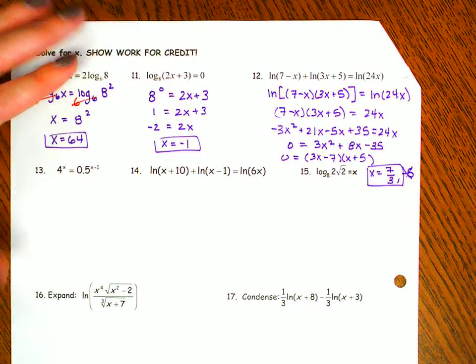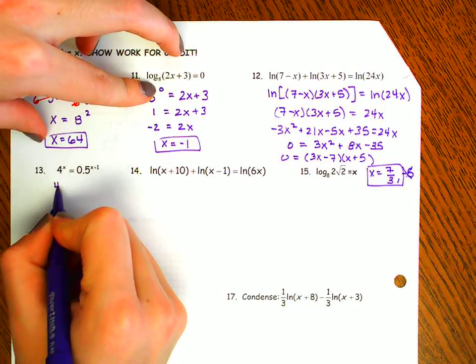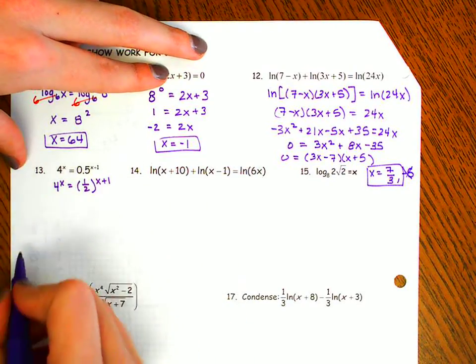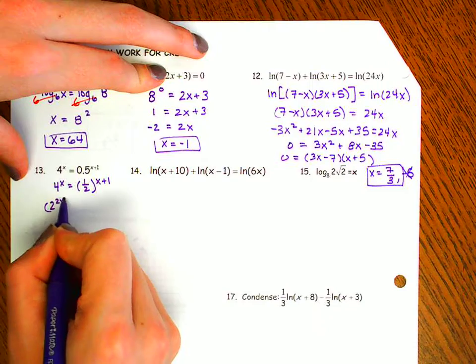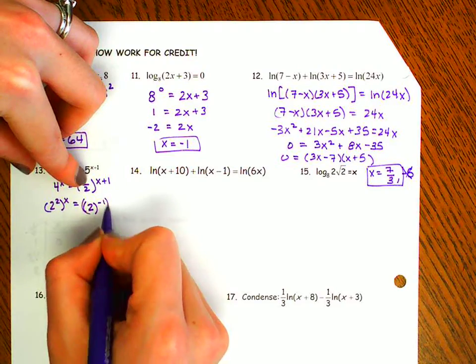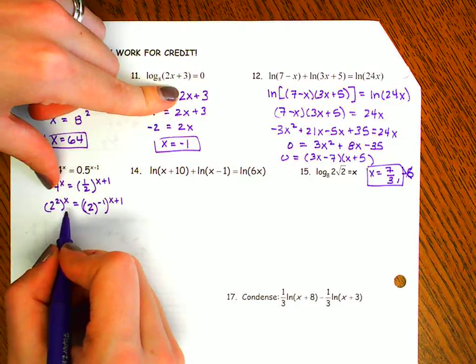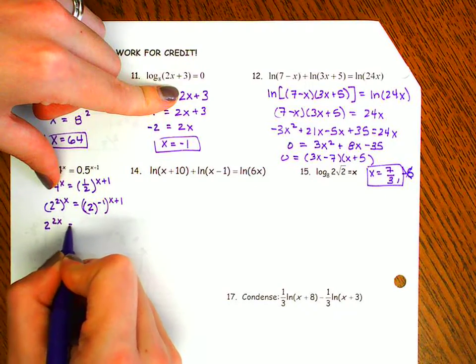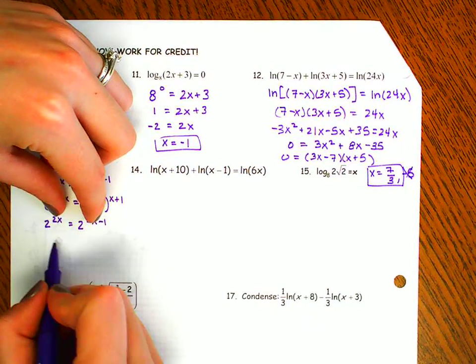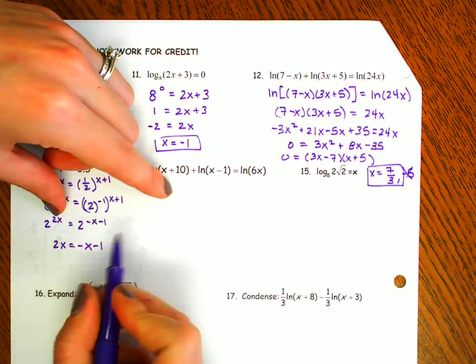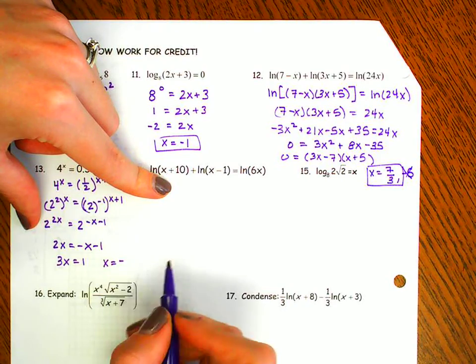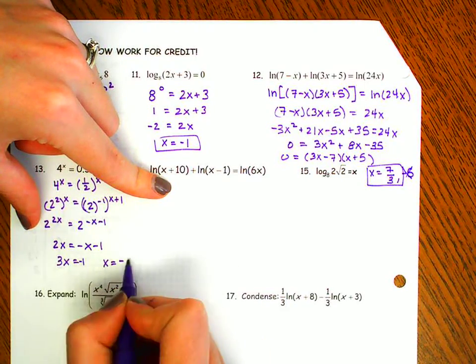Number 13. Okay, let's think about this. This 0.5 is really the same as 1 half. Let's try to give them the same base. Okay, so this is the same as 2 squared raised to the x. This is the same as 2 to the negative 1. So if I rewrite this, I'm going to get 2 to the 2x and 2 to the negative x minus 1. In order for these expressions to have the same value, their exponents have to be the same. So now I can say that 2x equals minus x minus 1. I'm going to add x to the side. And I'm left with x equals negative 1 third.